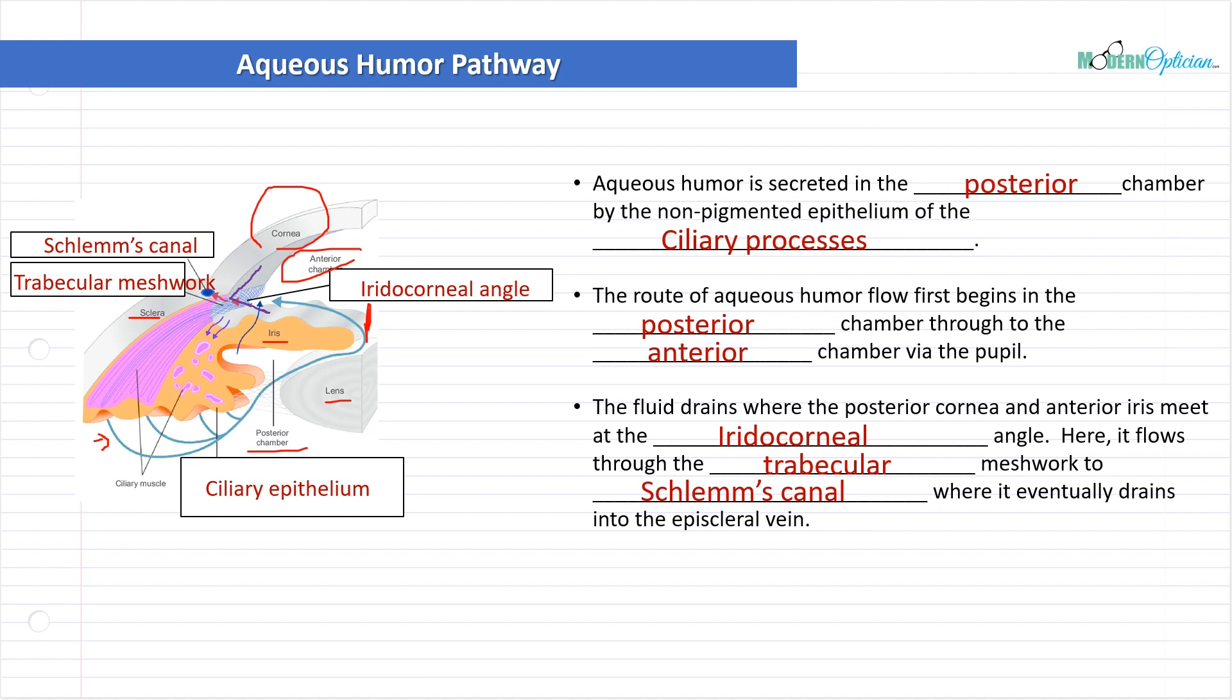It's produced in the posterior chamber, flows through the pupil, goes through the anterior chamber, drains in the angle. That's where the trabecular meshwork is found, kind of like a spongy tissue that soaks it up, and then it works itself out of the eye. Why is this important? Because it's a constant flow.